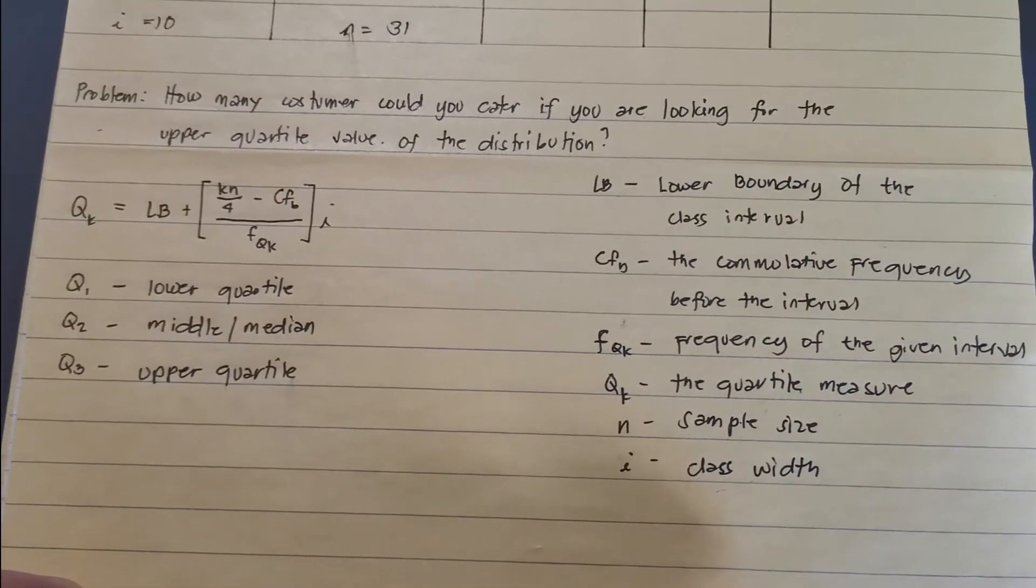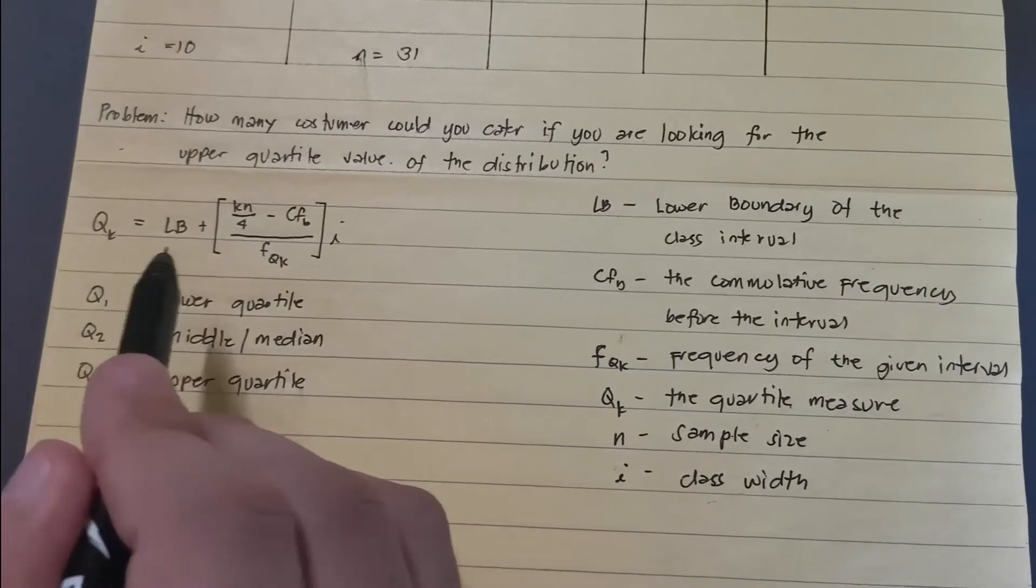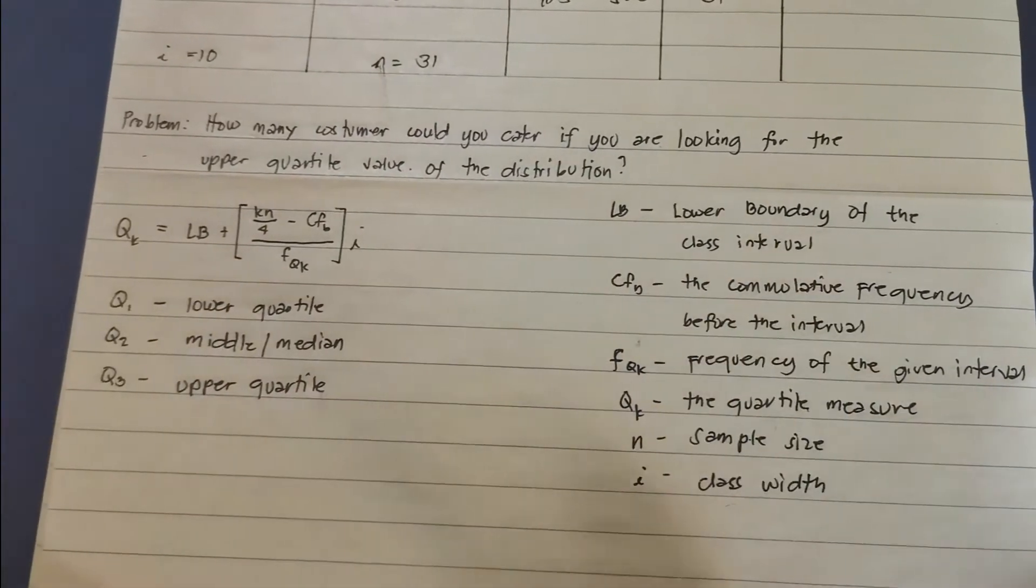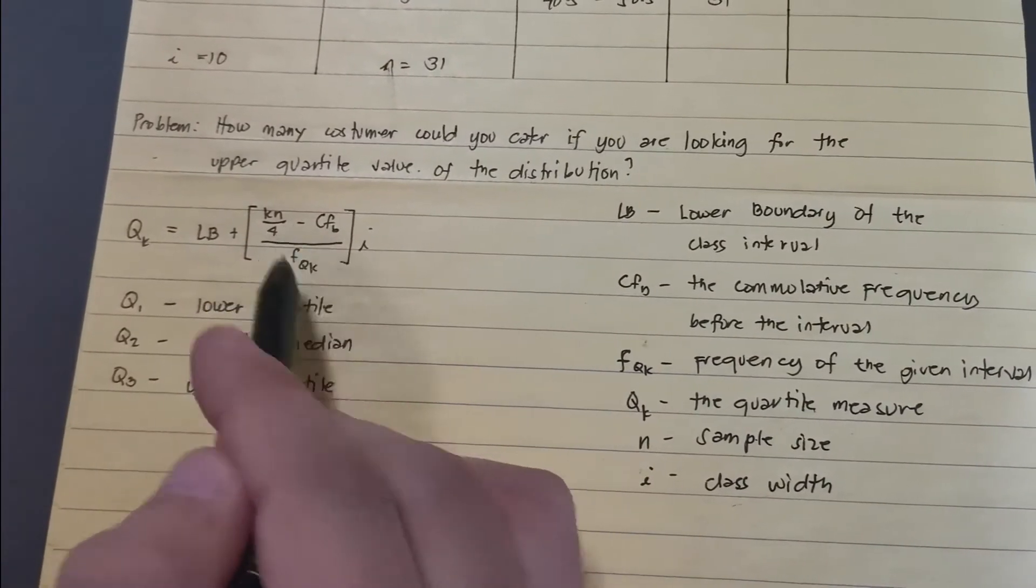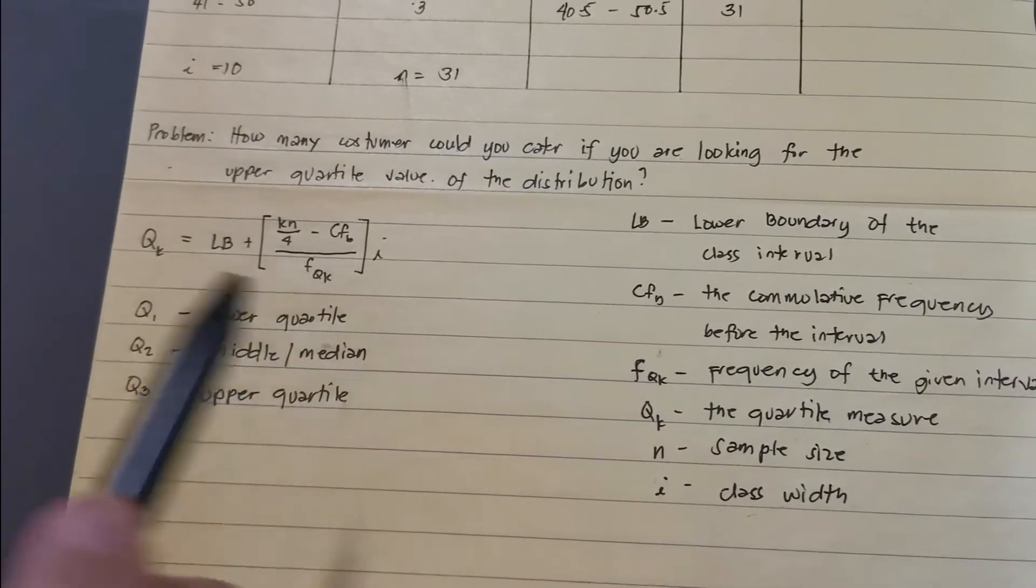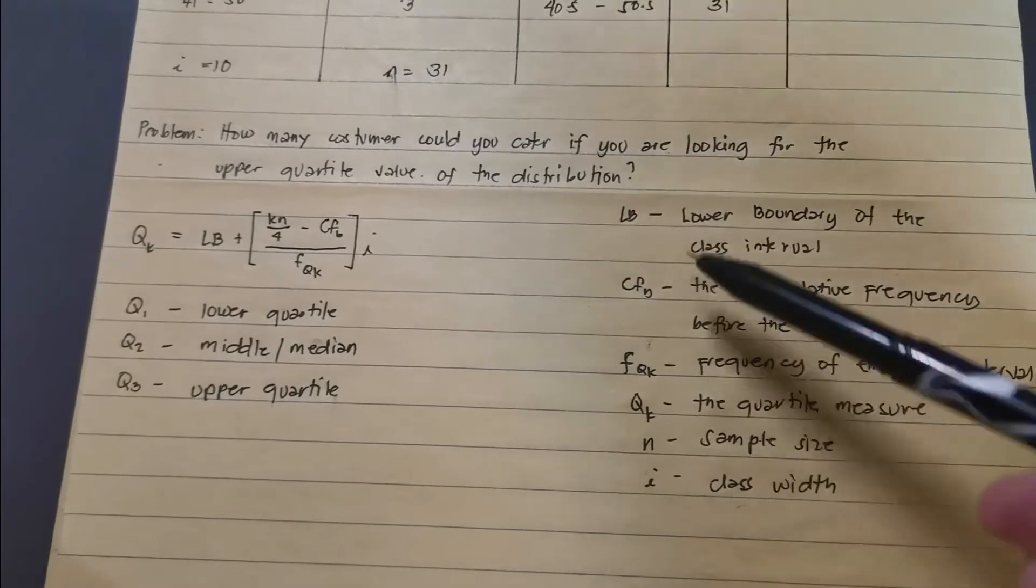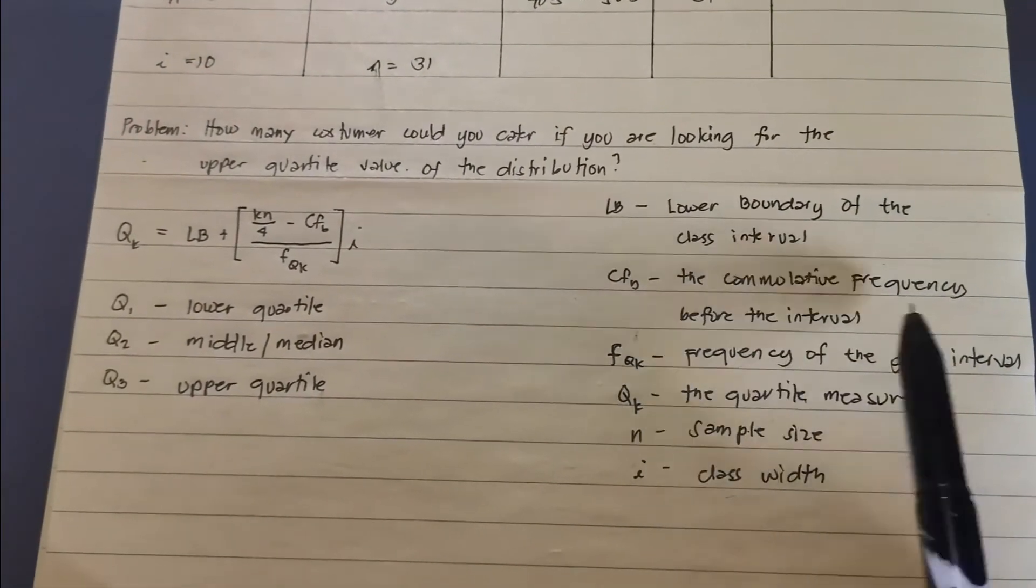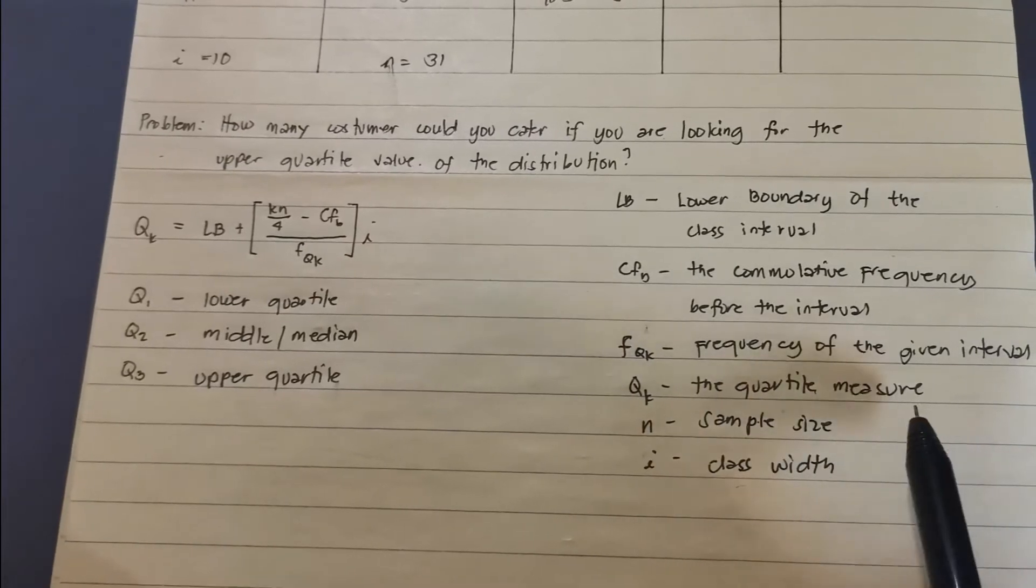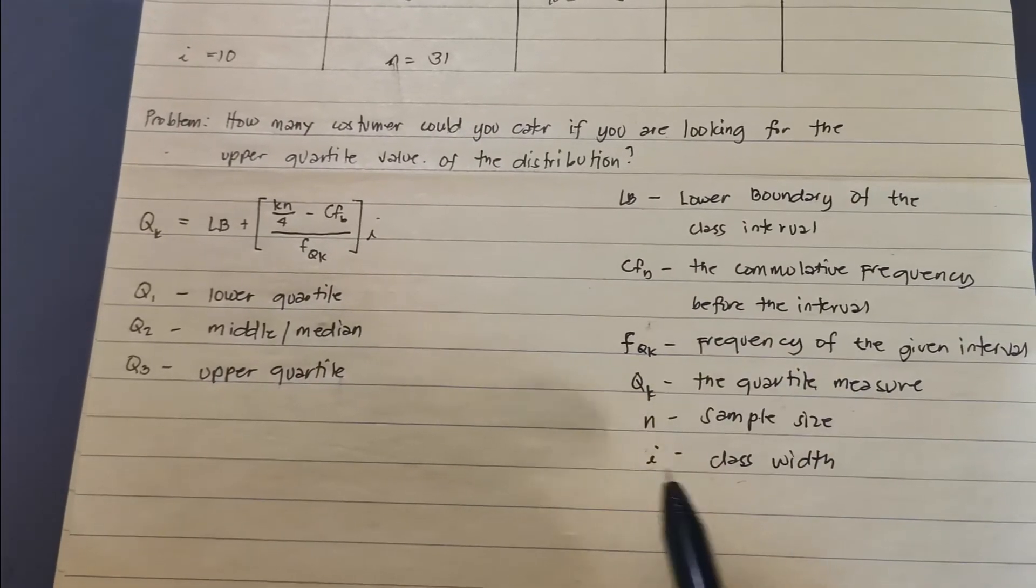In order for us to solve the Q sub 3, we really needed the right formula. Yes, guys, do not forget to have the right formula. Otherwise, we will never get the right answer. So, let's continue our computation. This is our formula. You notice we have the formula here, which is Q sub K equals LB or lower boundary plus K times N divided by 4, divided by 4 because we're solving for quartile. And then minus CF sub B, which is the cumulative frequency before the quartile cumulative frequency. And then the frequency of that interval that we're talking about. And then, of course, we have our i, the class width.